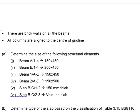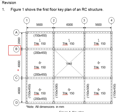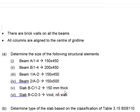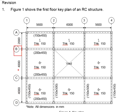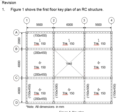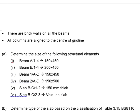Next, you are to determine the slabs. Slab BC12 refers to this slab, and its thickness is 150 mm. Slab BC23 — there is a void here, so there is no slab. With that, you have identified the sizes of all the structural elements listed.